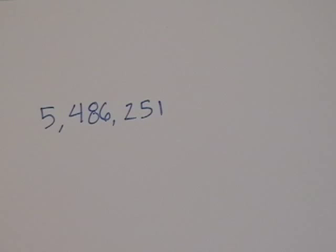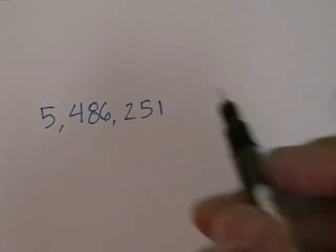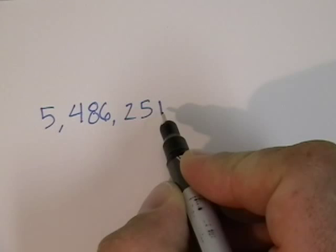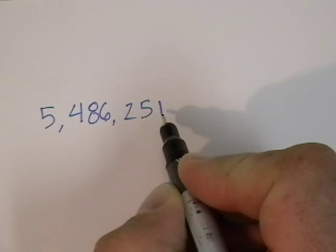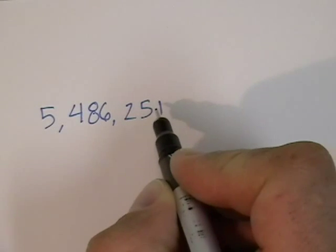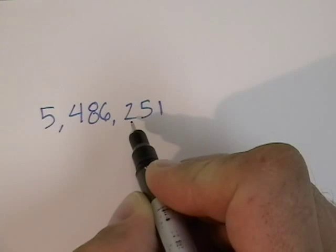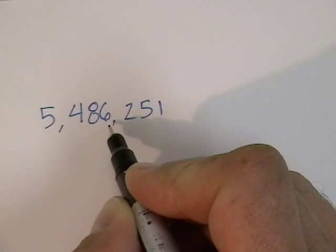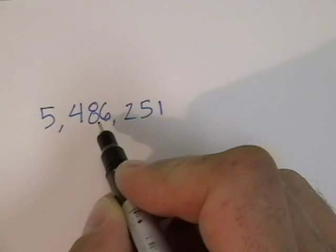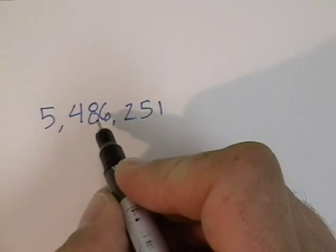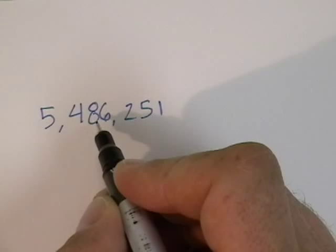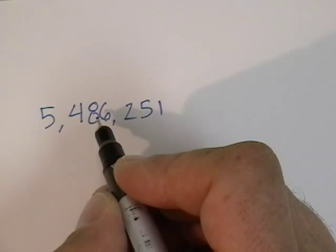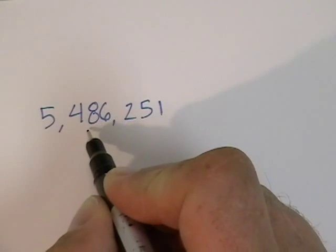the first thing I need to do is identify the ten-thousandths place. Starting from the right, I have the ones place, tens place, hundreds place, thousands place, ten-thousandths place. Since we're rounding to the nearest ten-thousandths place, I underline that digit.